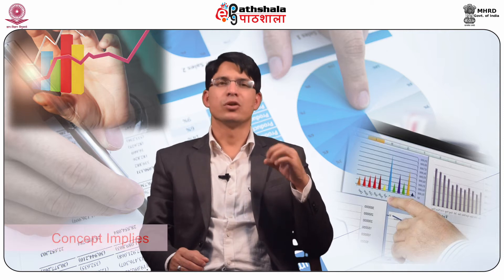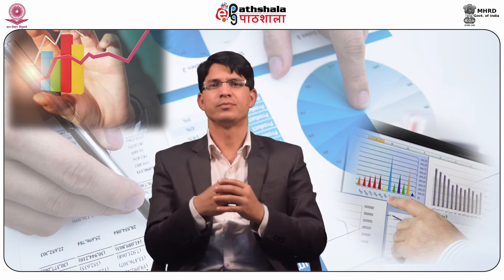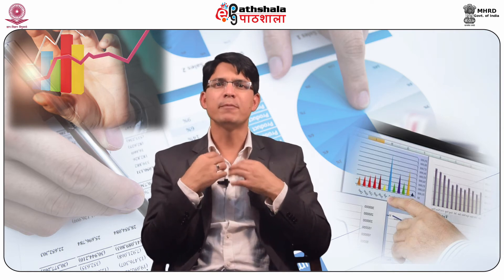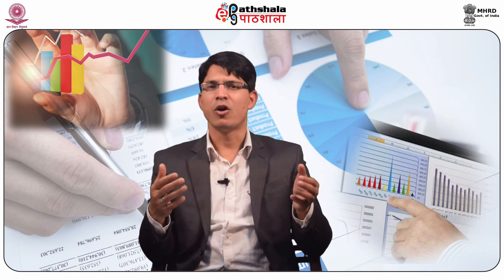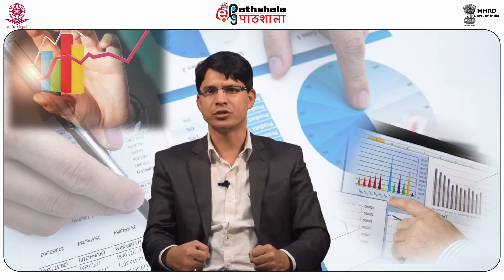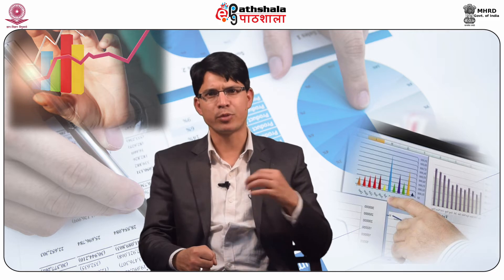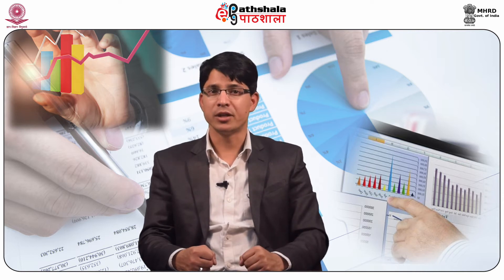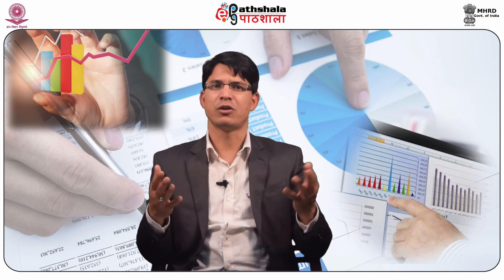Business Entity Concept. This concept implies that a business unit is separate and distinct from the person who supplied capital to it. It means that business has a separate legal entity from its owners. For accounting purposes, the business and its owners are treated as two separate entities. A business unit has its own separate identity, and business is kept separate from the proprietor so that transactions of business may not be recorded with him. If this concept is not followed, affairs of the business will be mixed with the private affairs of the proprietor and the true picture of the business will not be revealed.